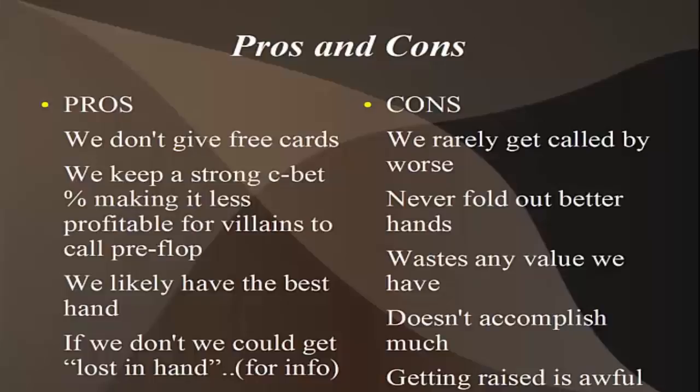There are some pros: we don't get lost in hand as often, we keep it simple, we don't give free cards, we keep our percentages in line — it looks normal. But maybe we get to this flop of ace, king, two with king-ten, and our opponent is a game theory expert and a professional hand reader. When we check back, he either knows exactly what we have — he puts us on a mediocre king — and can make life complicated for us: not make any mistakes against us, check-raise the turn, overbet the turn, then jam the river, putting us in a really ugly, awkward spot.